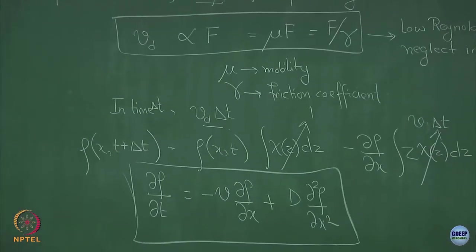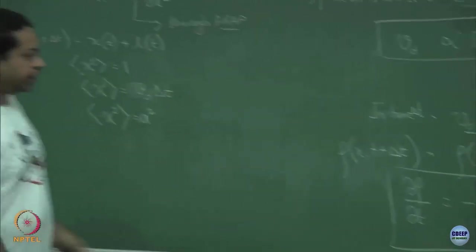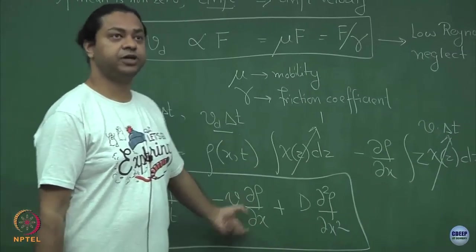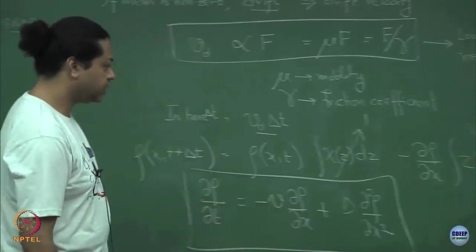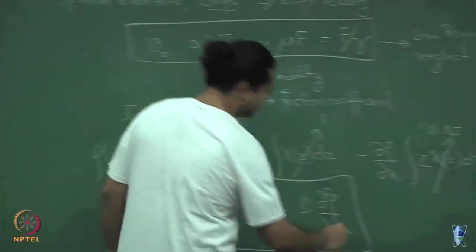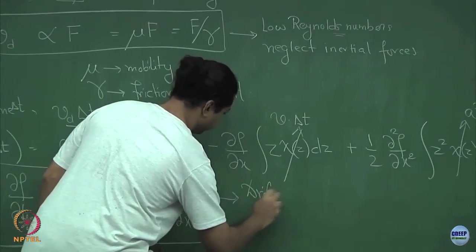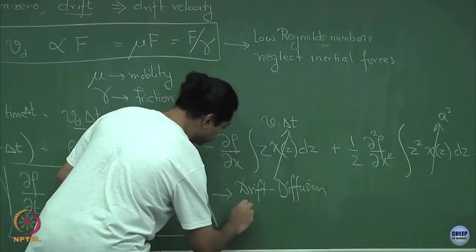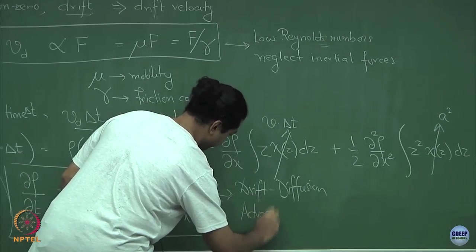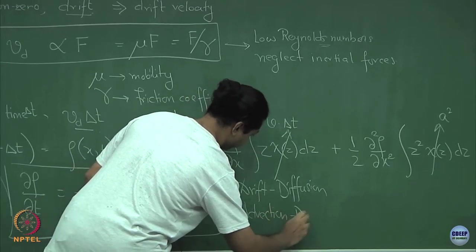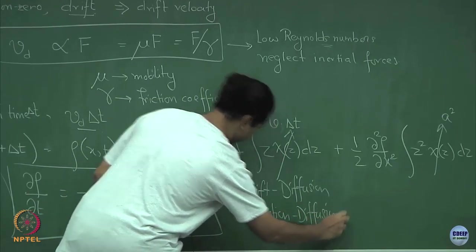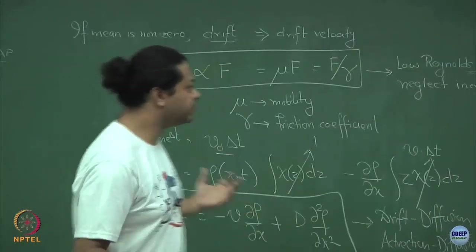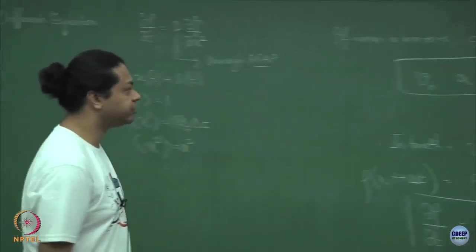So when you have a nonzero mean for the step lengths, in addition to the standard diffusion term D del² rho/del x², you get this additional drift term which is minus v times del rho/del x. This is called the drift-diffusion equation, or the advection-diffusion equation — it has multiple names. You can derive this equation in multiple ways.